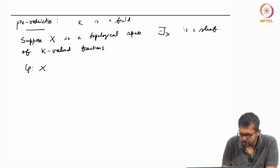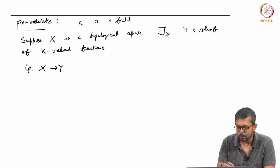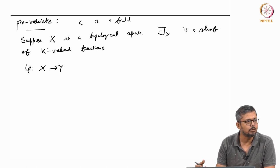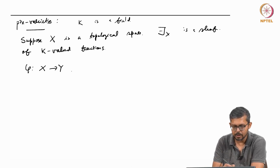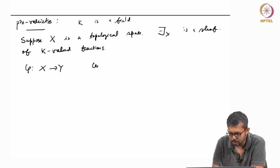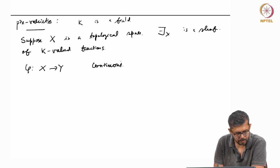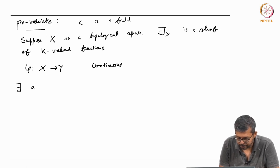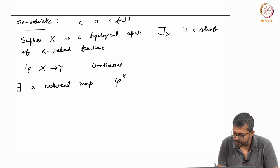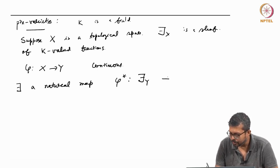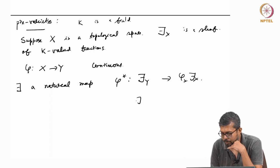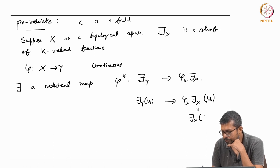If you have a map phi from X to Y, similarly for every topological space I associate this sheaf F(X), the sheaf of K-valued functions. So if X and Y are topological spaces and phi is continuous, then there is a natural map phi* from F(Y) to phi_* F(X).